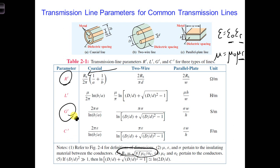So if R prime and G prime are both equal to 0, the transmission line is considered lossless.